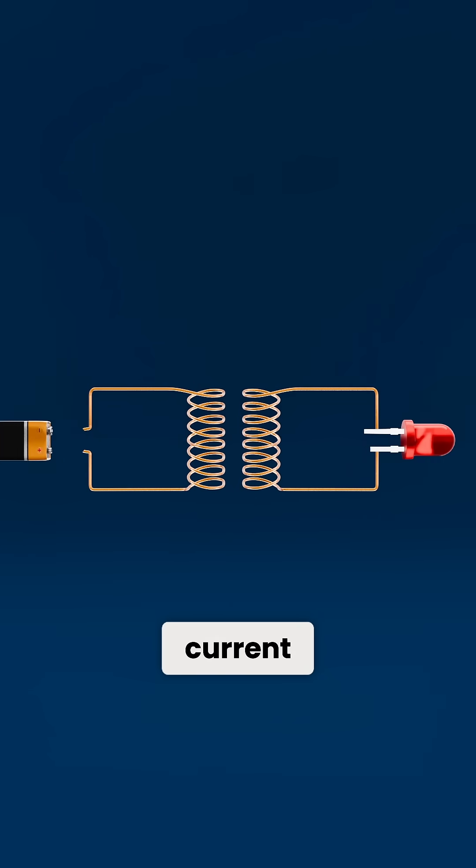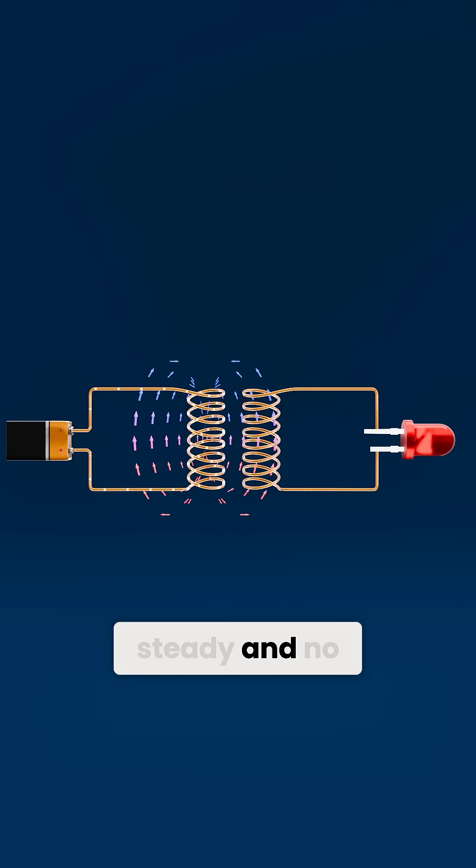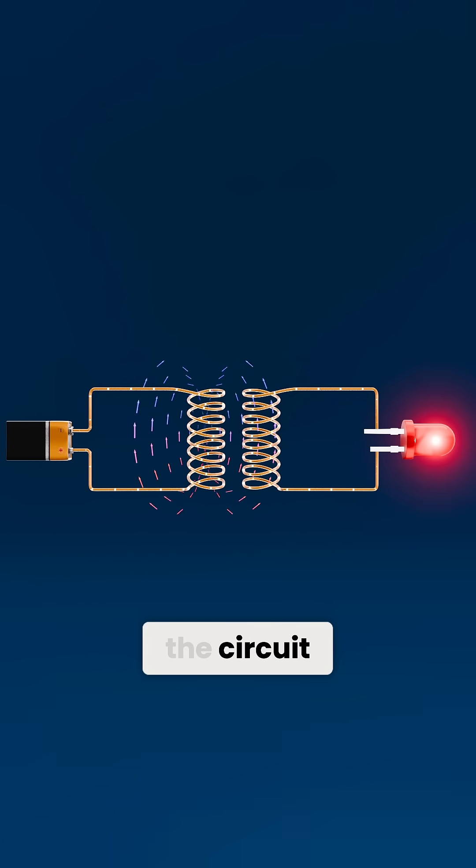With direct current, the flux would remain steady and no voltage would be induced once the circuit settled.